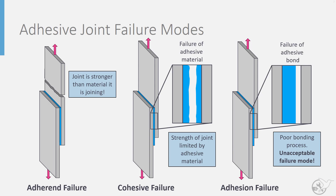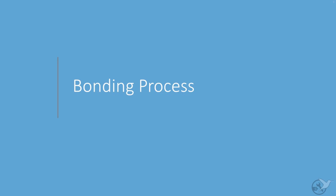This failure mode is not acceptable for aircraft structures, and if it occurs, it is a sign that there were problems with the bonding process itself. It is important to understand the basic steps within the bonding process in order to understand the potential risks for adhesion failure in a bonded joint.